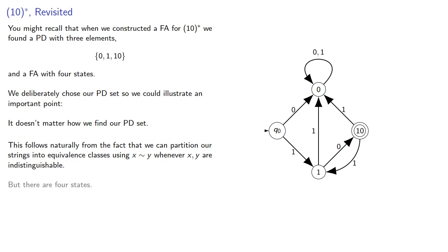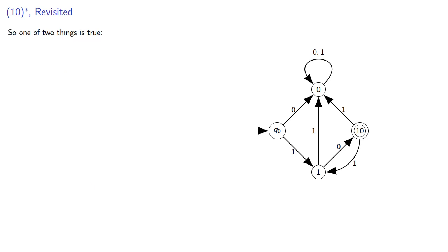But there are four states. So one of two things is true. Either there's a fourth string that's distinguishable from 0, 1, and 10. Or we don't need all four states.